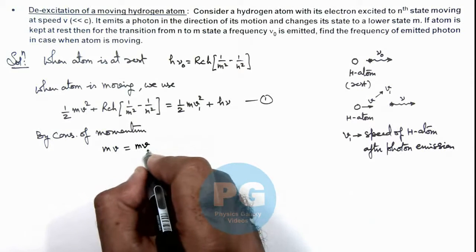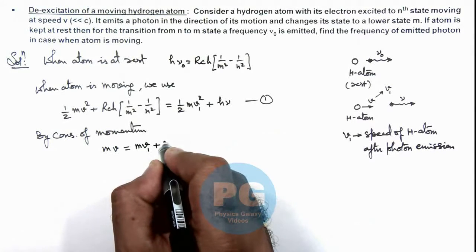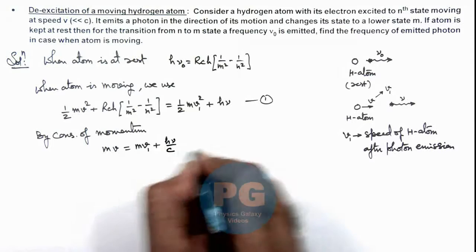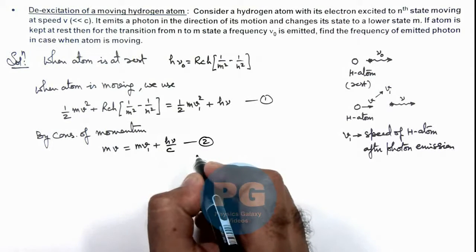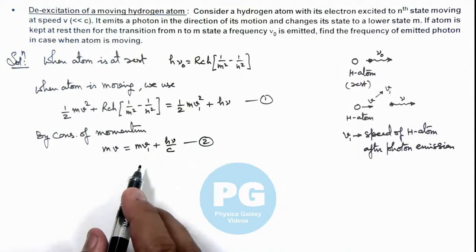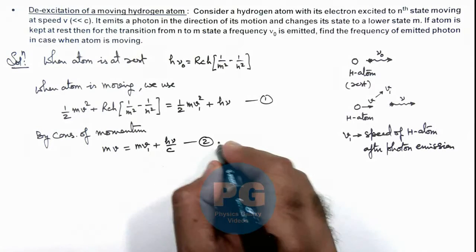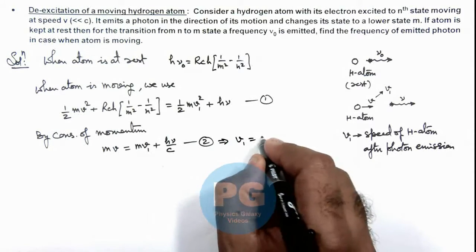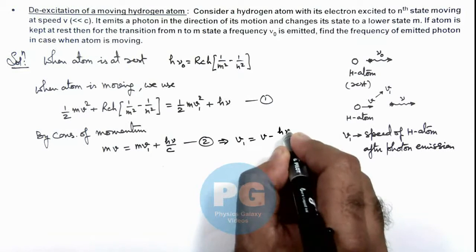The momentum will change to m*v_1 plus this will be h/lambda which can be written as h*nu/c, that is here second equation. Now in this state from this equation 2, we can get the value of v_1 which is equal to v minus h*nu/(m*c).